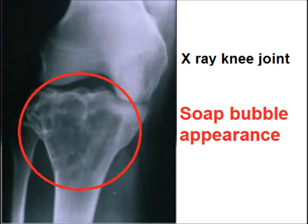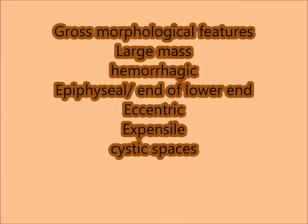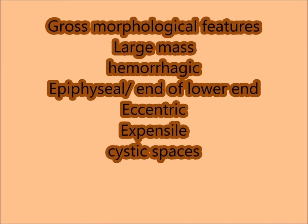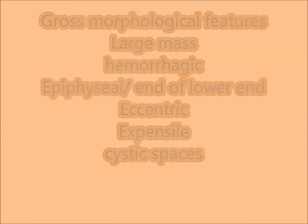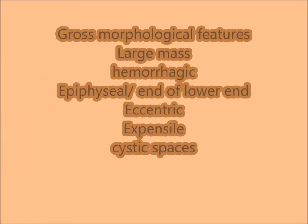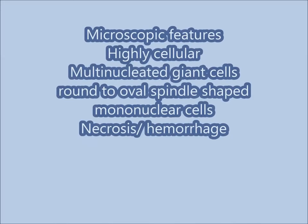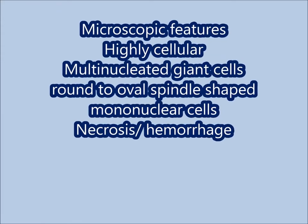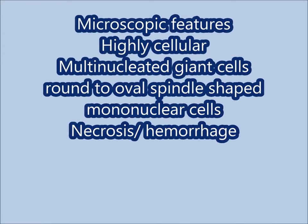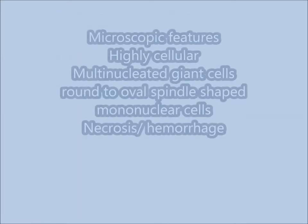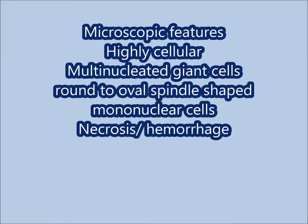The X-ray showed a soap-bubble appearance. The gross appearance showed a large mass that is hemorrhagic, epiphyseal, involving the lower end of long bones, eccentric, expansile, with cystic spaces. Microscopic features include: highly cellular tissue with multinucleated giant cells, round to oval spindle-shaped mononuclear cells, and areas of necrosis and hemorrhage.